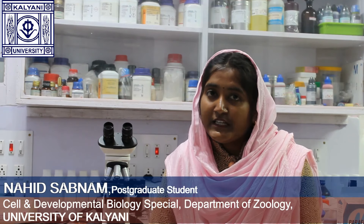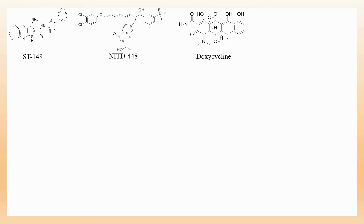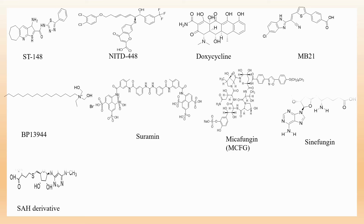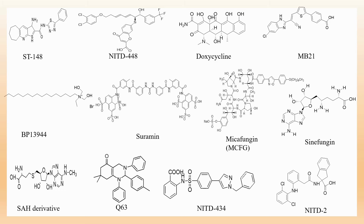In our review, we discussed a total of about 128 potent inhibitors. ST148 is an inhibitor of the capsid protein. NITD448 and tetracycline show inhibitory activity on the envelope protein. NB21 and BP13944 can inhibit the function of protease. Helicase activity is inhibited by suramine, ivermectin, and many others. Synaptojanin side derivatives have some inhibitory activity on NS5. Q63, NRT434, and NRT2 mainly inhibit the process of replication.